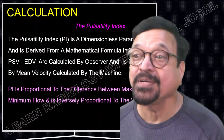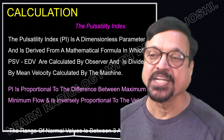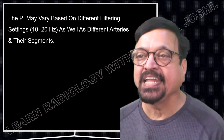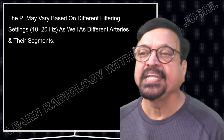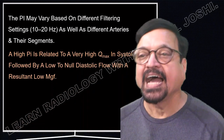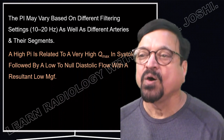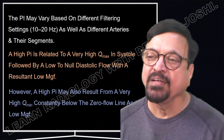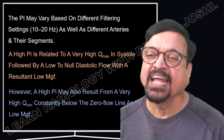PI is a dimensionless parameter derived from a formula in which PSV minus EDV are calculated by the observer and divided by the mean velocity calculated by the machine — a combination of observer and machine. PI is proportional to the difference between maximum and minimum flow and is inversely proportional to mean velocity. The normal range of PI values is between 3 to 5. PI may vary based on different filter settings — changing from 10 to 20 Hz will alter it — as well as for different arteries and different segments. A high PI relates to a very high systolic velocity followed by low or null diastolic flow.